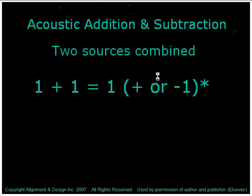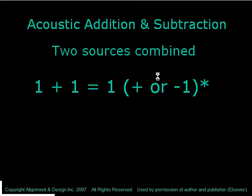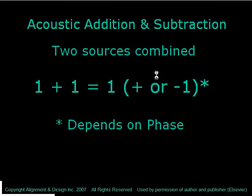We're going to talk about what happens when you do acoustic addition and subtraction. We're going to combine two sources. A simplistic formula to show you that is 1 plus 1 equals 1, plus or minus 1. That little asterisk means it depends on phase. Phase is, of course, the secret agent behind the scenes that decides whether or not when we add two speakers together, whether we get addition or we get subtraction.